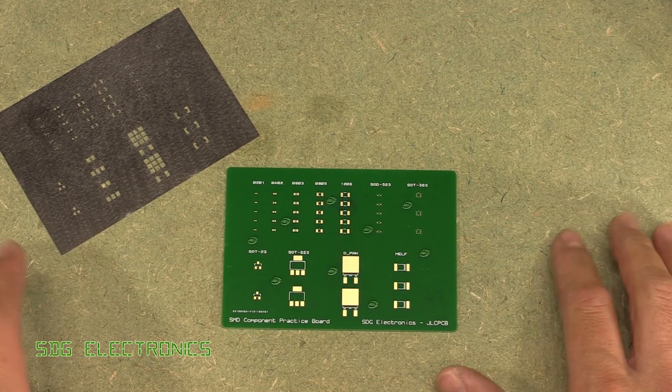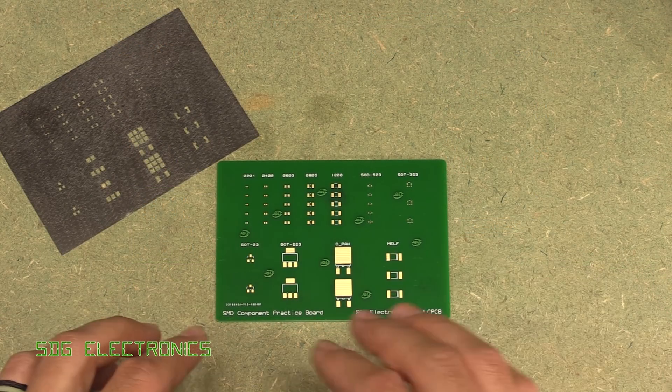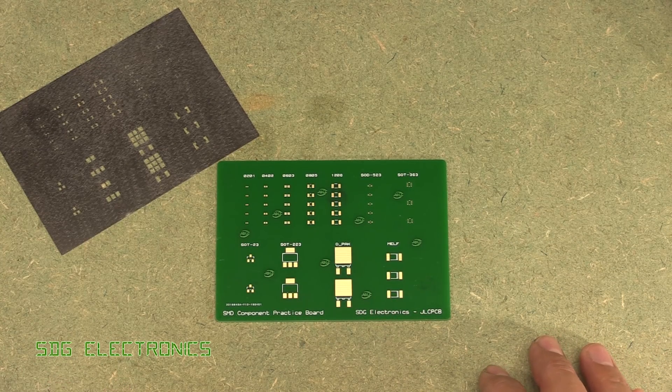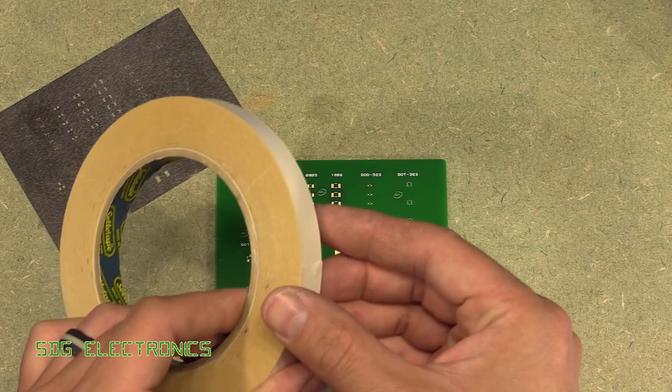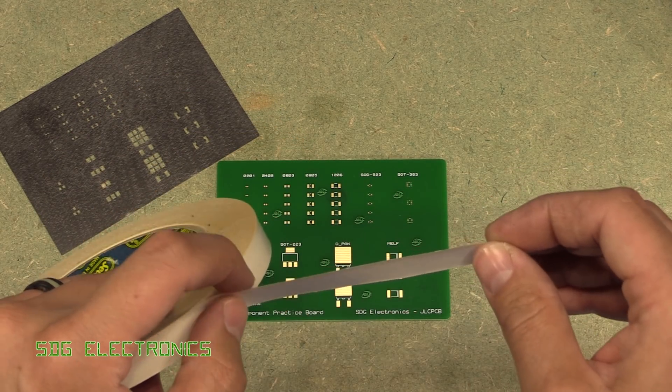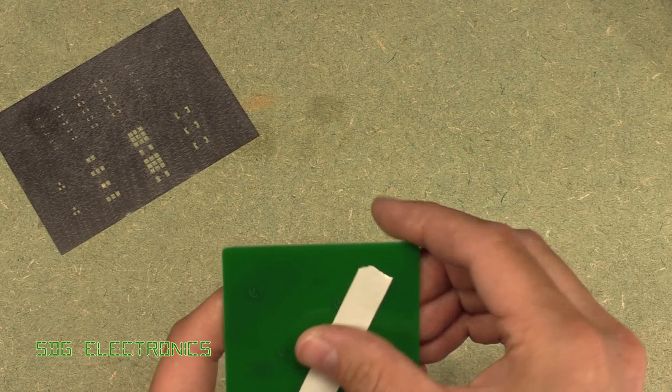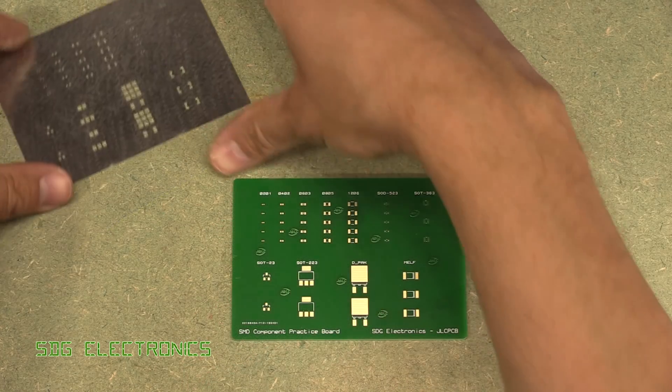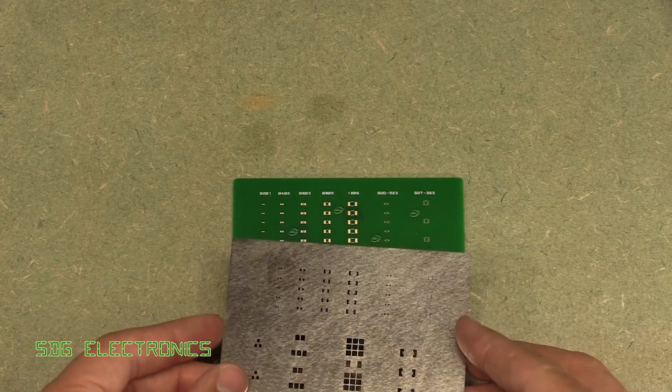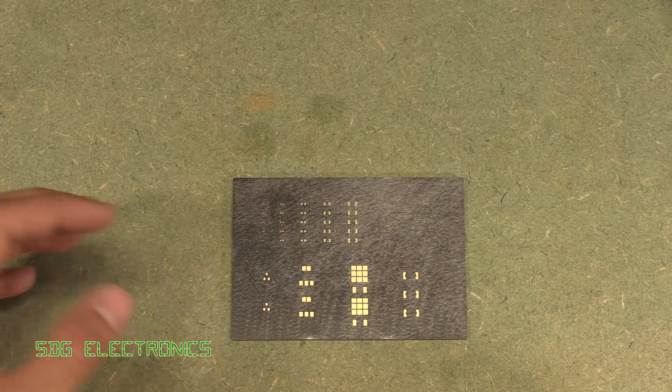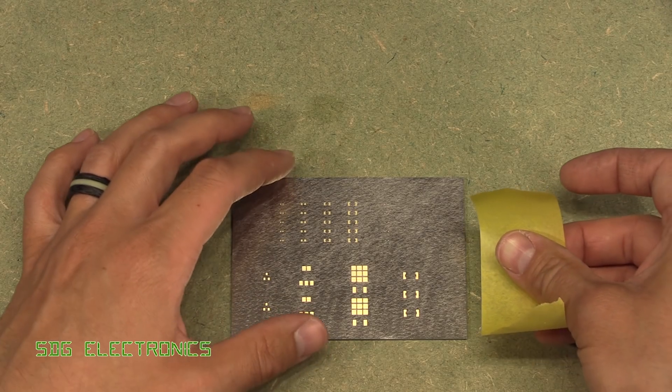I've just got a sheet of scrap MDF just so that we can get the solder paste on the board without accidentally getting it all over the desk. The first thing we're going to do is get a little bit of double-sided sticky tape to temporarily hold the PCB down onto the MDF. Then we want to line up the stencil with all of the pads on here, and when you think you've got that in place, just tape it down lightly.